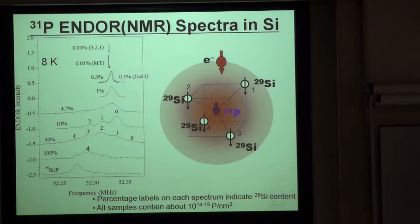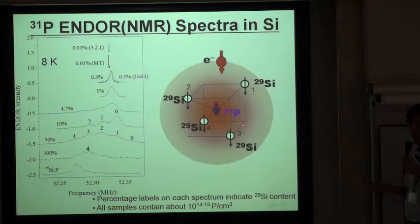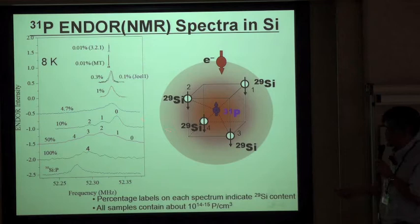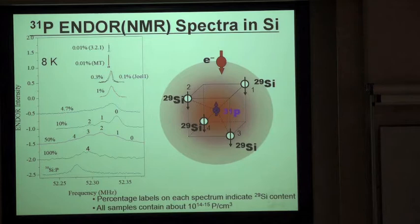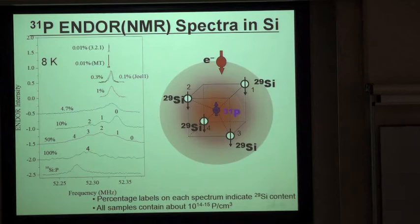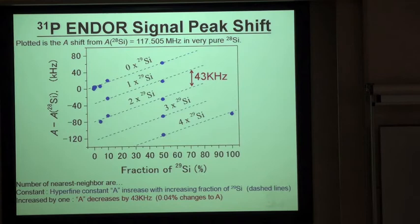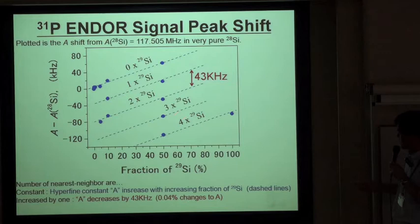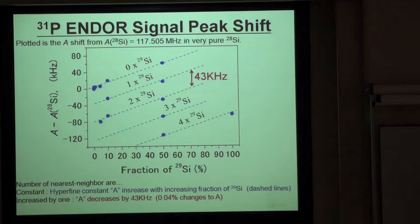The conclusion is that the NMR frequency of 31P is affected strongly by both the number of nearest-neighbor 29Si atoms and the overall background nuclear spin concentration. The shift of peaks 0, 1, 2, 3, and 4 as a function of the fraction of 29Si are parallel, and each peak is separated by a coupling constant of 43 kHz.